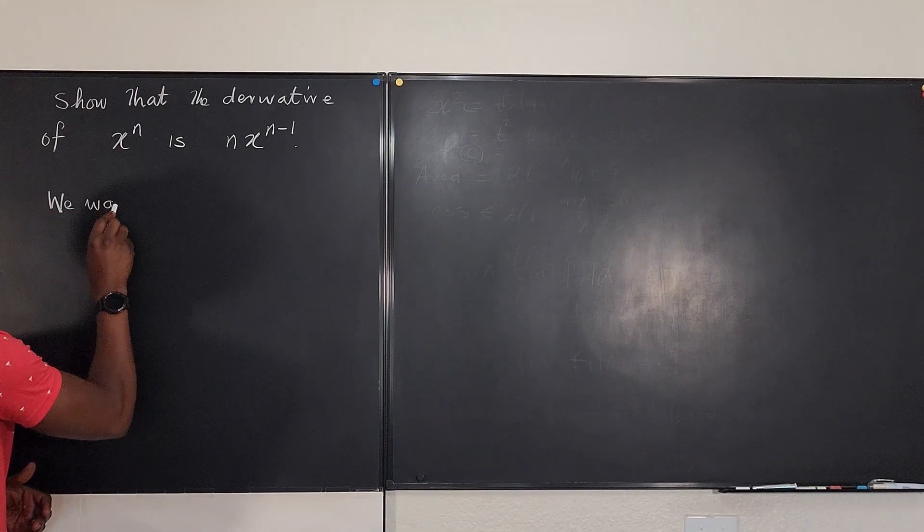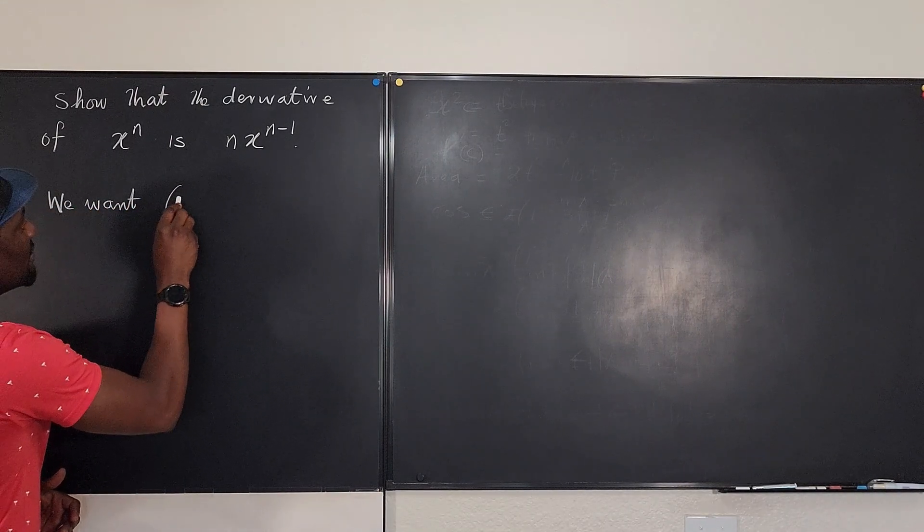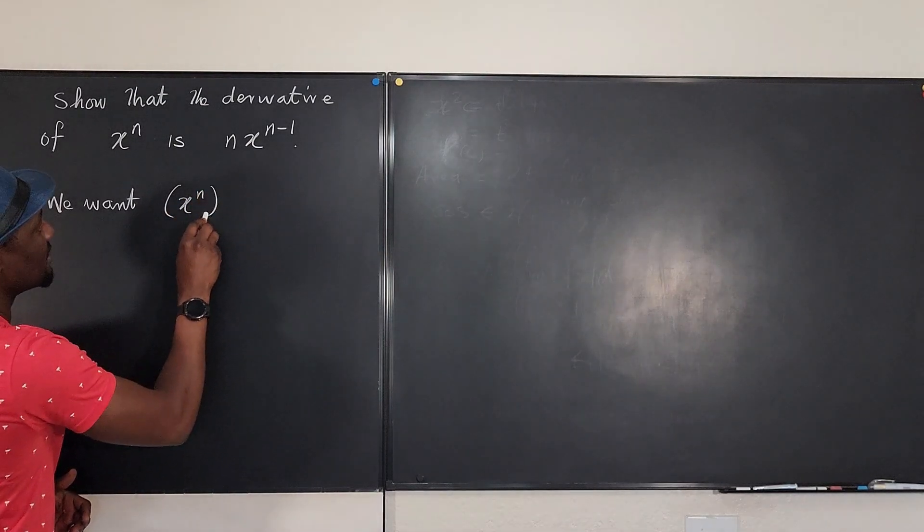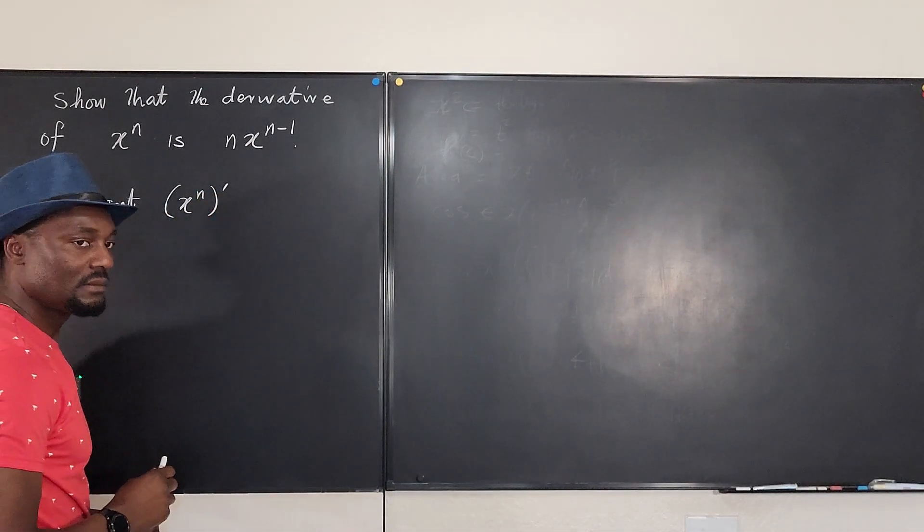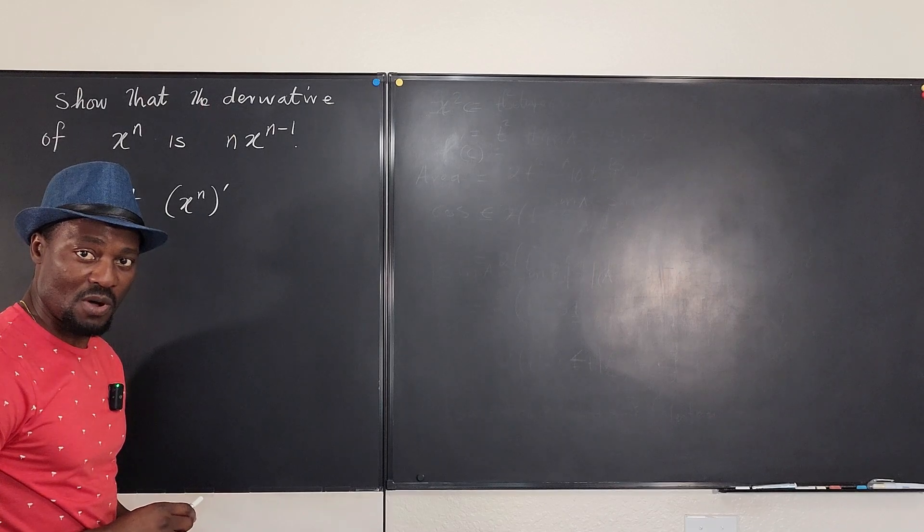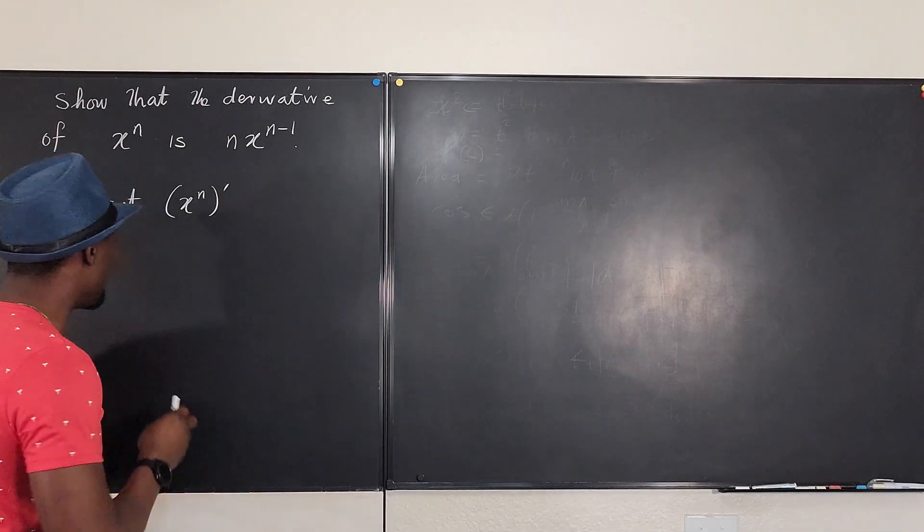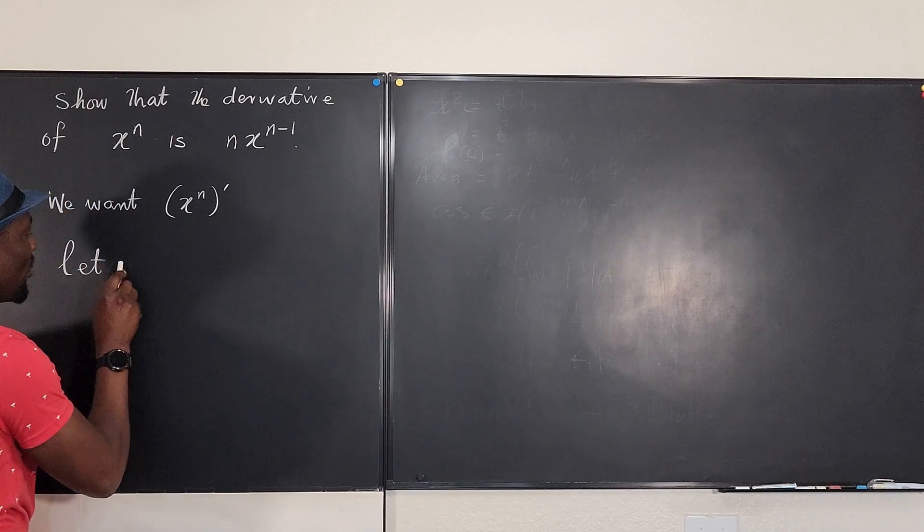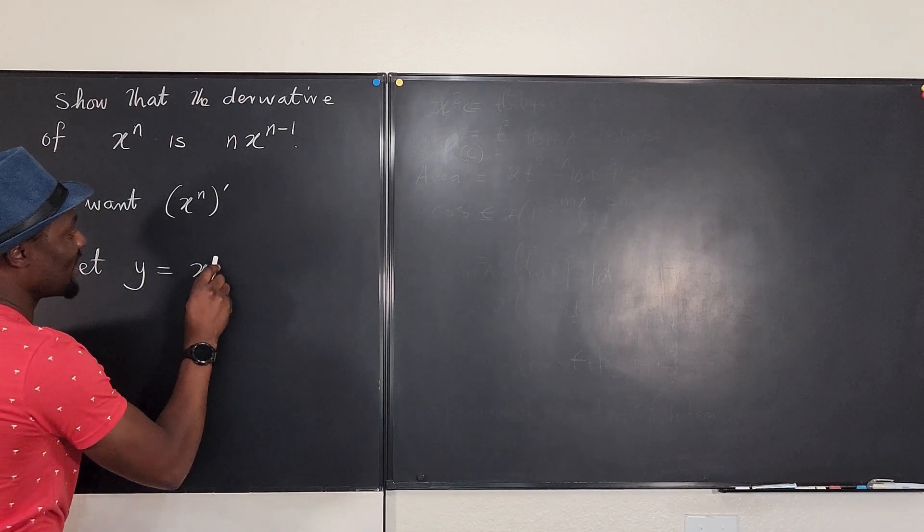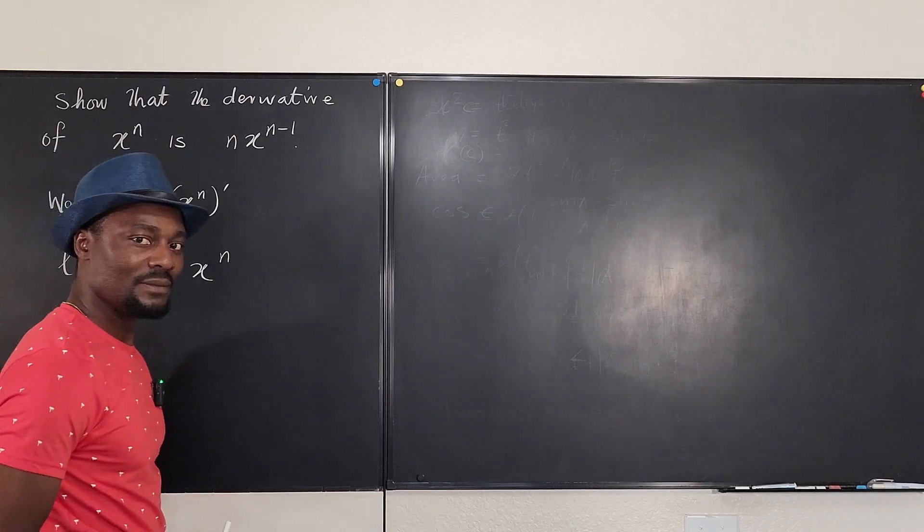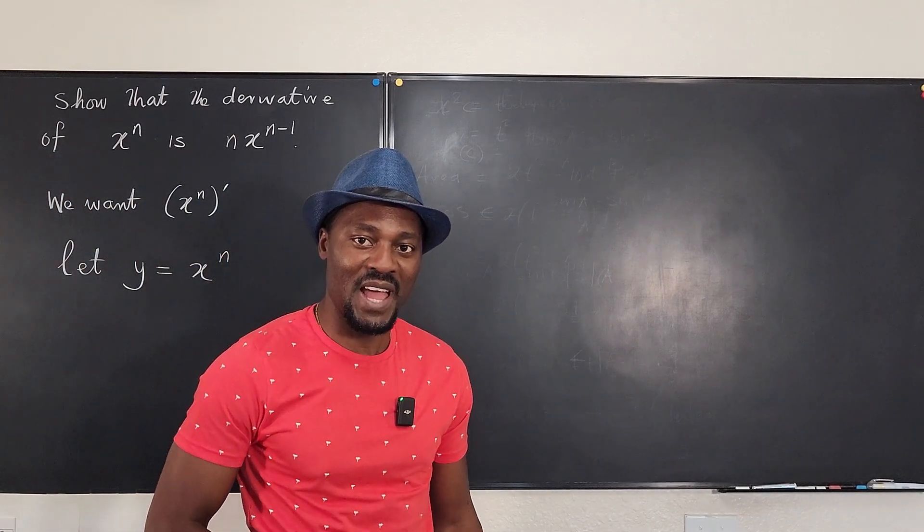We want the derivative of x^n—that's what we want, and we want to make sure that this is what we get. So I'm going to say, let y be x^n. You can't do anything about that; that's true.